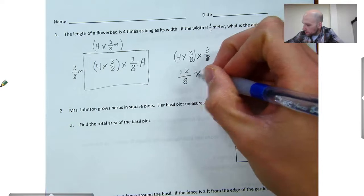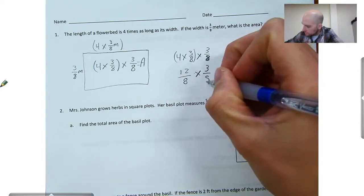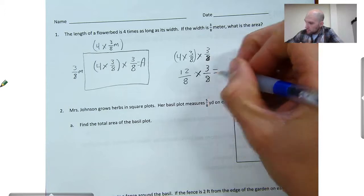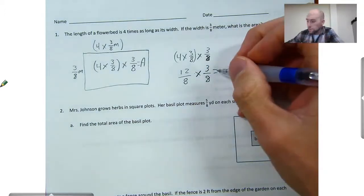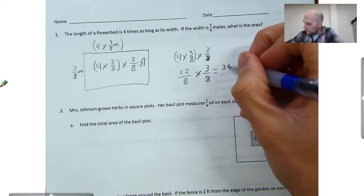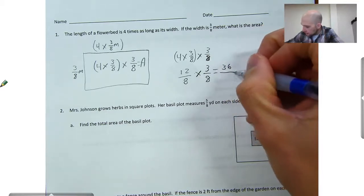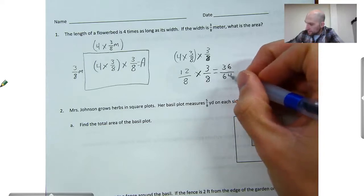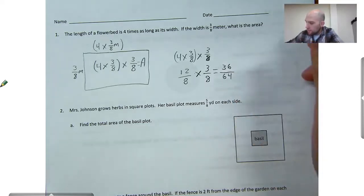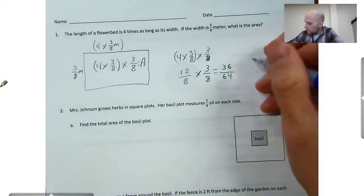Now I'm going to multiply that by three-eighths. Now I'm just going to multiply straight across. I'll get 12 times three will give me 36. And 8 times eight is 64. So I'll get 36 64ths of a meter, which will be my area.